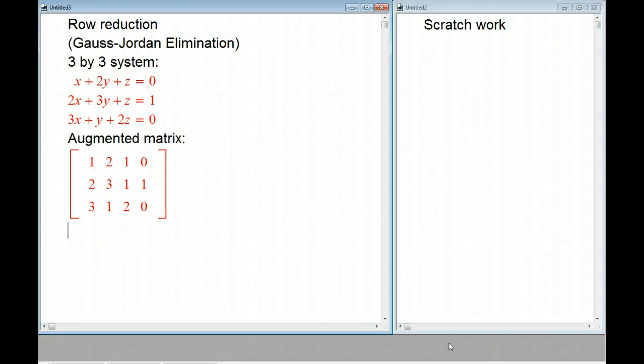Here's an example of row reduction, or more officially, Gauss-Jordan elimination to solve a three-by-three system of equations, a linear system.